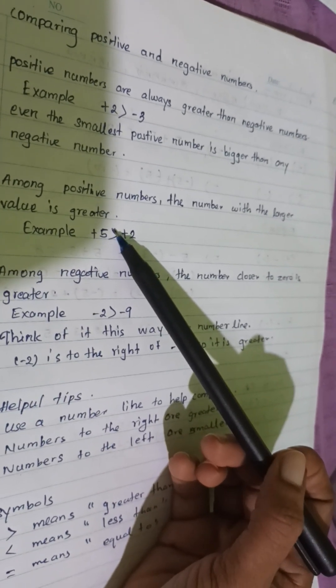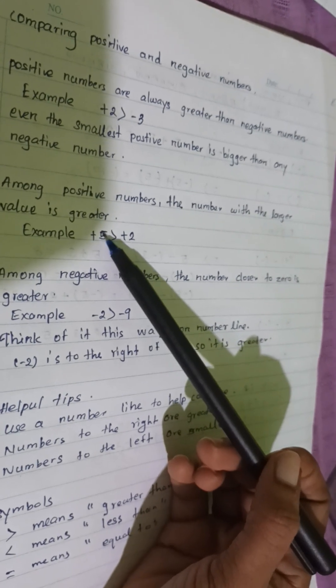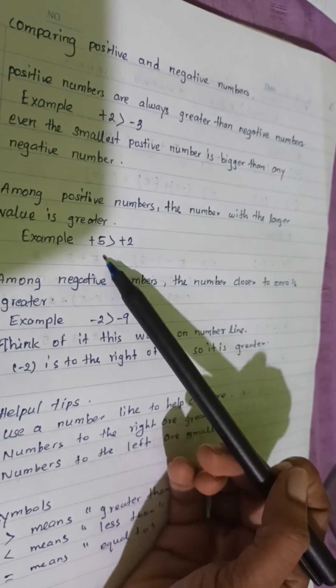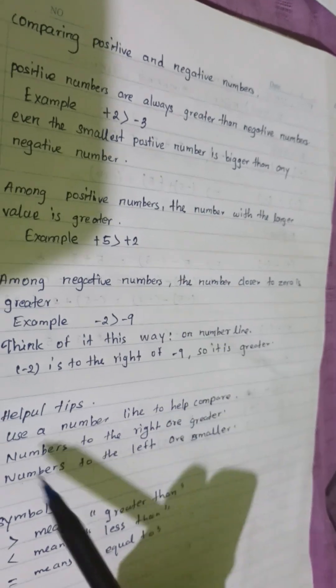5 is the largest positive number. 2 is the smallest positive number.